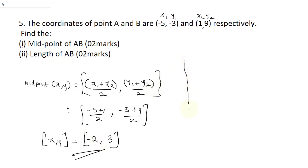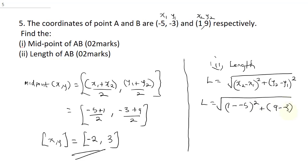Now, in order to solve for the length of AB, to find the length of a line with two points, your length is going to be square root of x2 minus x1 all squared plus y2 minus y1 all squared. Now, our length is going to be, we're going to put in our values, our x2, it's 1 minus minus 5 all squared plus, this is going to be 9 minus minus 3 all squared.